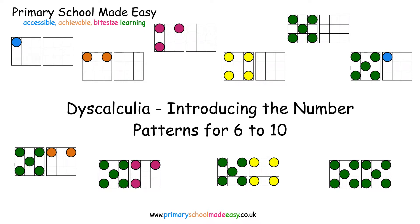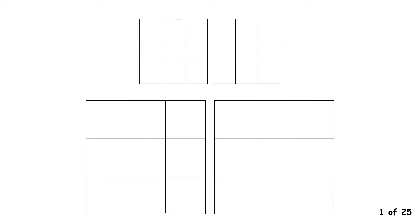Introducing the number patterns for 6 to 10. Like the numbers 1 to 5, the numbers 6 to 10 have a pattern of circles and colours. As you watch, try and remember the pattern for each number. Learning the patterns will really help you understand how the numbers 6 to 10 are made.